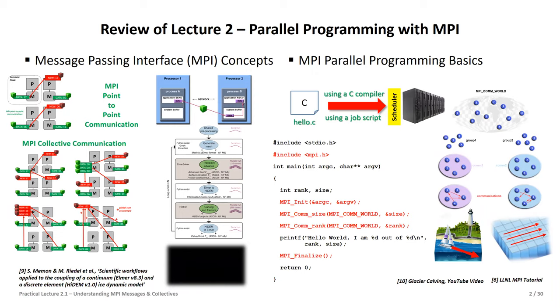This is where MPI send and receive actually works. Whenever you send something, the other processor also needs to be receiving — it needs to be listening. So for every send, you also need a matching receive. We'll talk about this when we have our ping-pong application demonstration later.